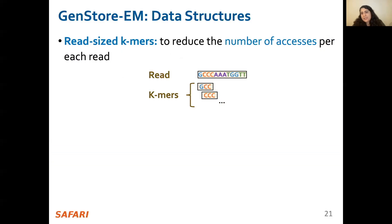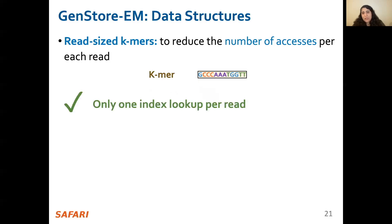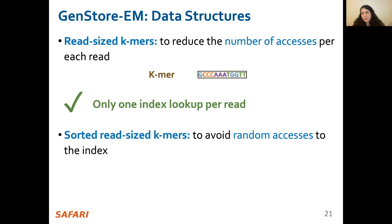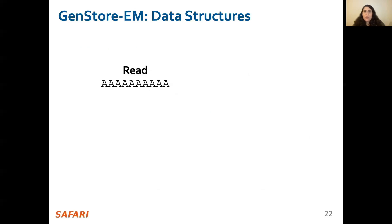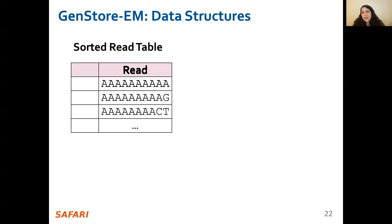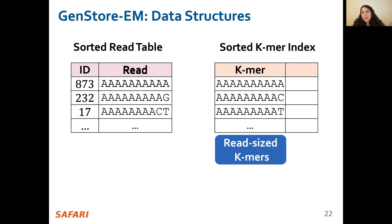To reduce the number of accesses per read, we introduce read-sized K-mers. Instead of extracting several K-mers per read and performing index lookups for each, we use the whole read as one K-mer and have only one index lookup per read. To avoid random accesses to the index, we introduce a sorted index of read-sized K-mers. The sorted index allows finding matches via sequential scanning of read sets and the index. In a simplified example where each short read consists of 10 characters, suppose we have two data structures: a sorted read table, each entry of which stores a read and its unique ID, and a sorted K-mer index which contains all unique read-sized K-mers extracted from the reference genome along with each K-mer's corresponding locations in the reference genome.